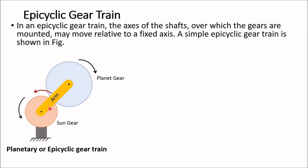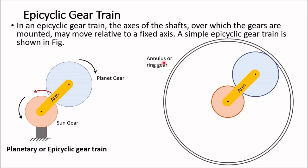This is a two-degree-of-freedom system. We require two inputs — the speed of the sun gear and the speed of the arm — to determine the speed of the planet gear. A more useful configuration adds a ring gear, also called an annulus, which has internal teeth and can rotate about the central axis. In many cases, one of the two inputs will be zero velocity, meaning it is fixed. The components are: sun gear, planet gear, arm, and ring gear — any one of which can be fixed.